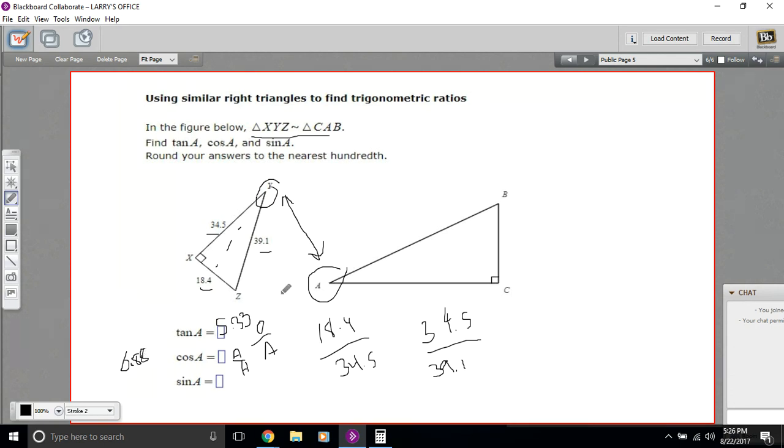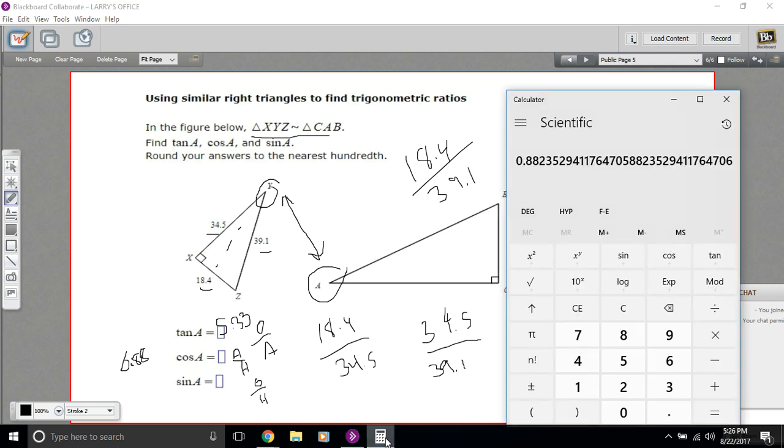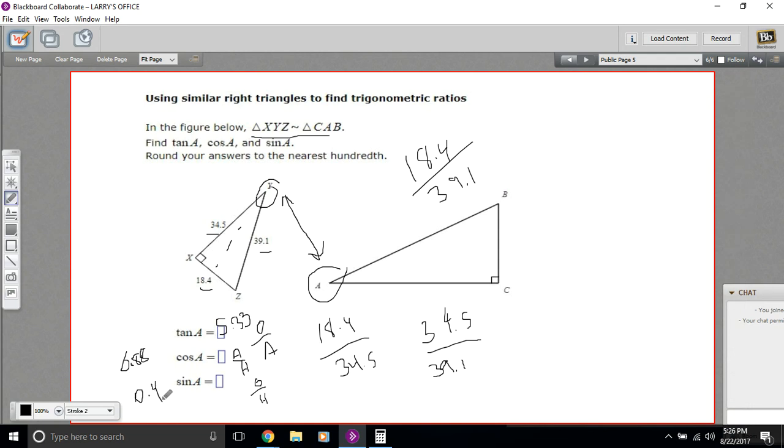All right, and finally, the sine, that is the opposite over the hypotenuse. So in this case, that is 18.4 over 39.1. And we'll calculate that. 18.4 divided by 39.1. And we get 0.47. So this is 0.47.